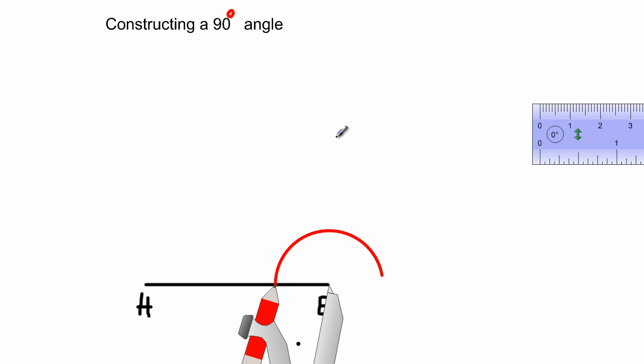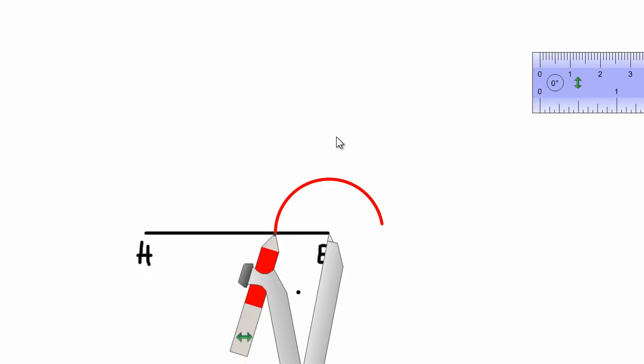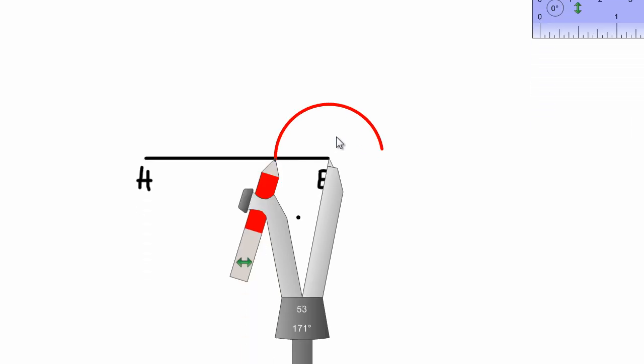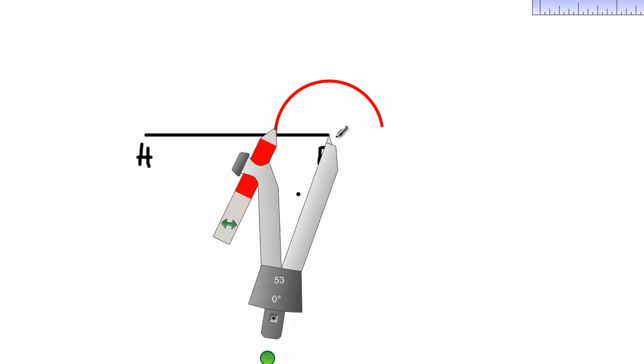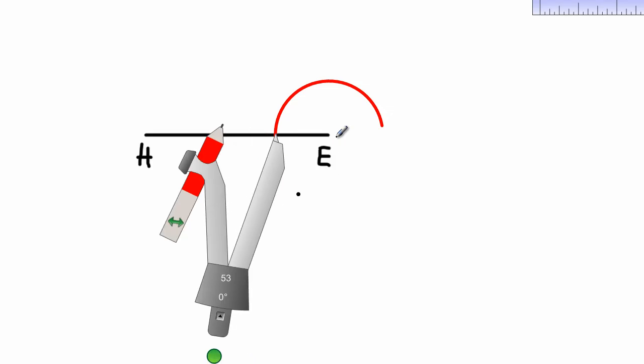By intuition, since I've swung an arc that cuts the line segment H E, I'm again going to swing an arc here.